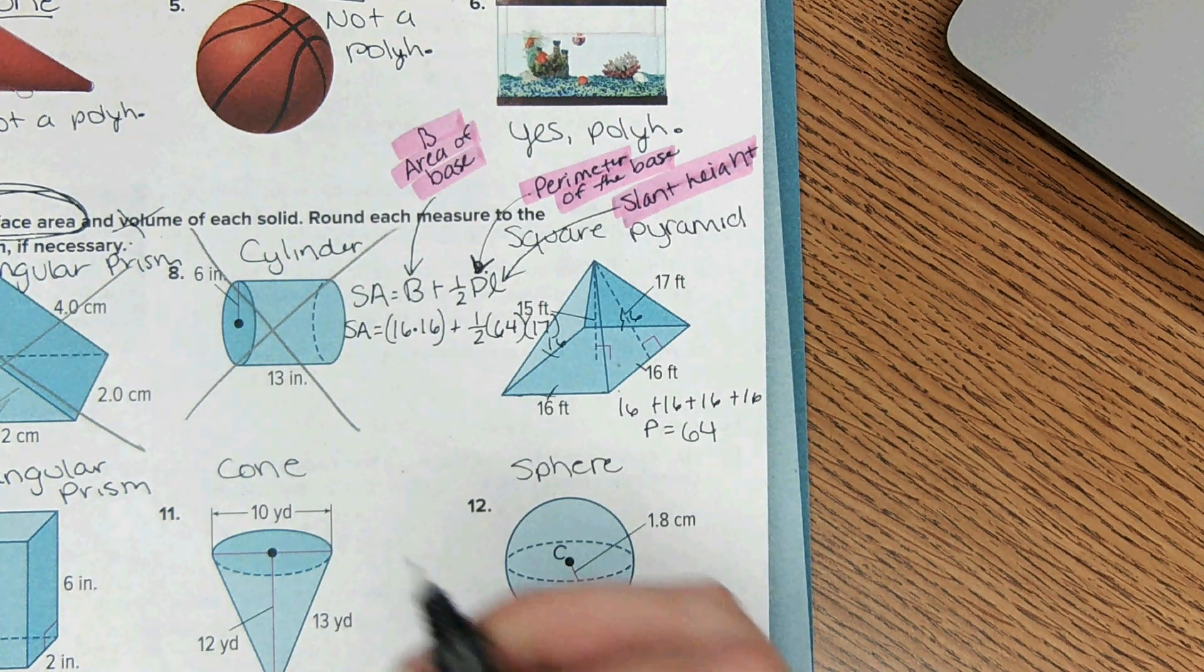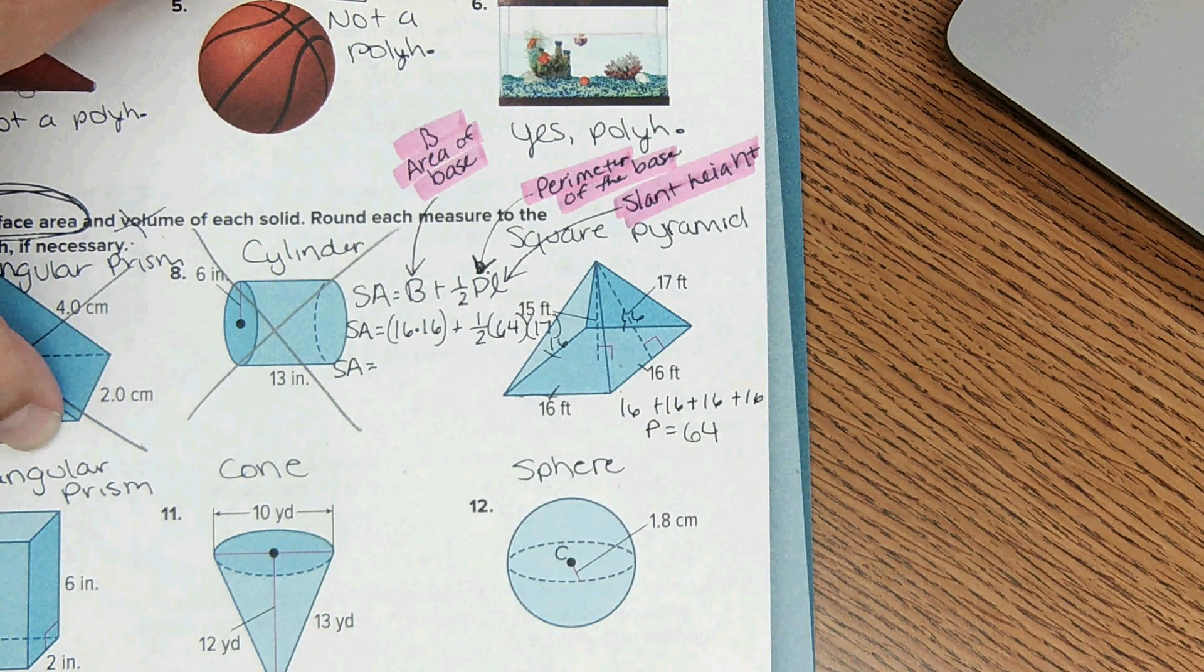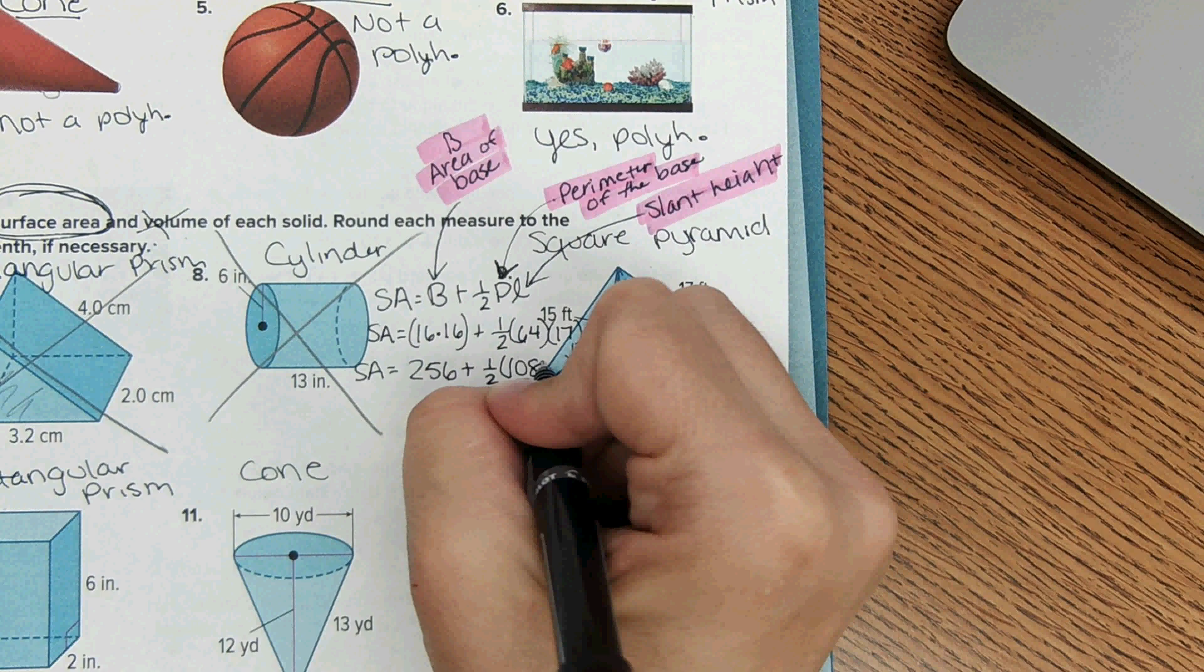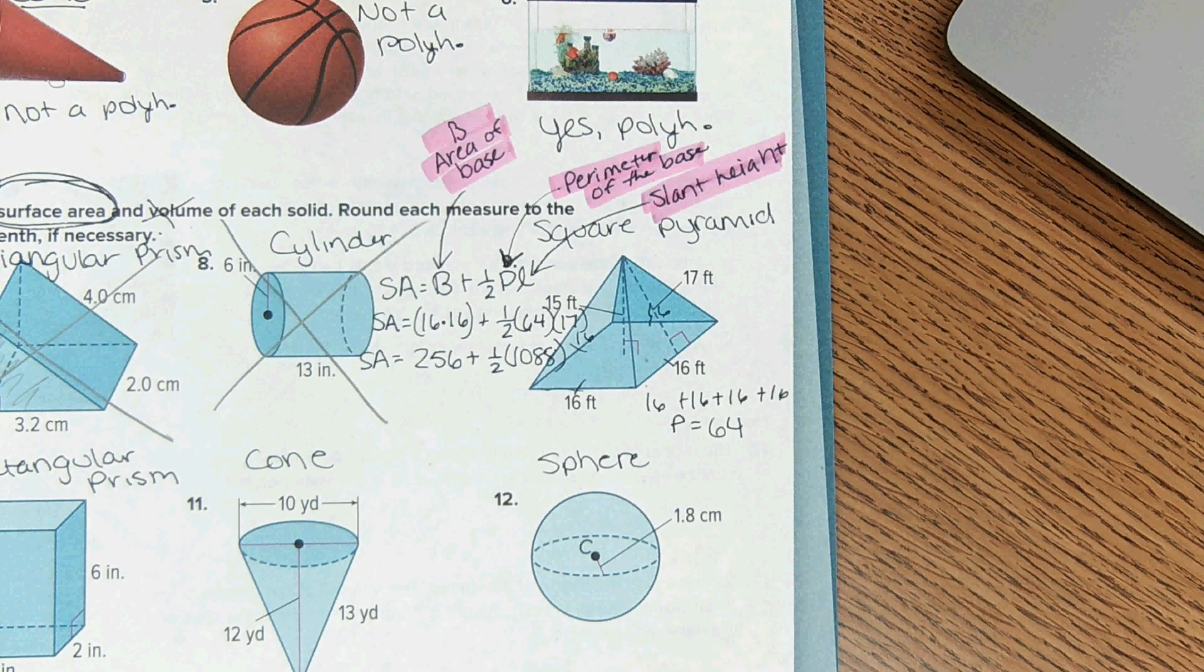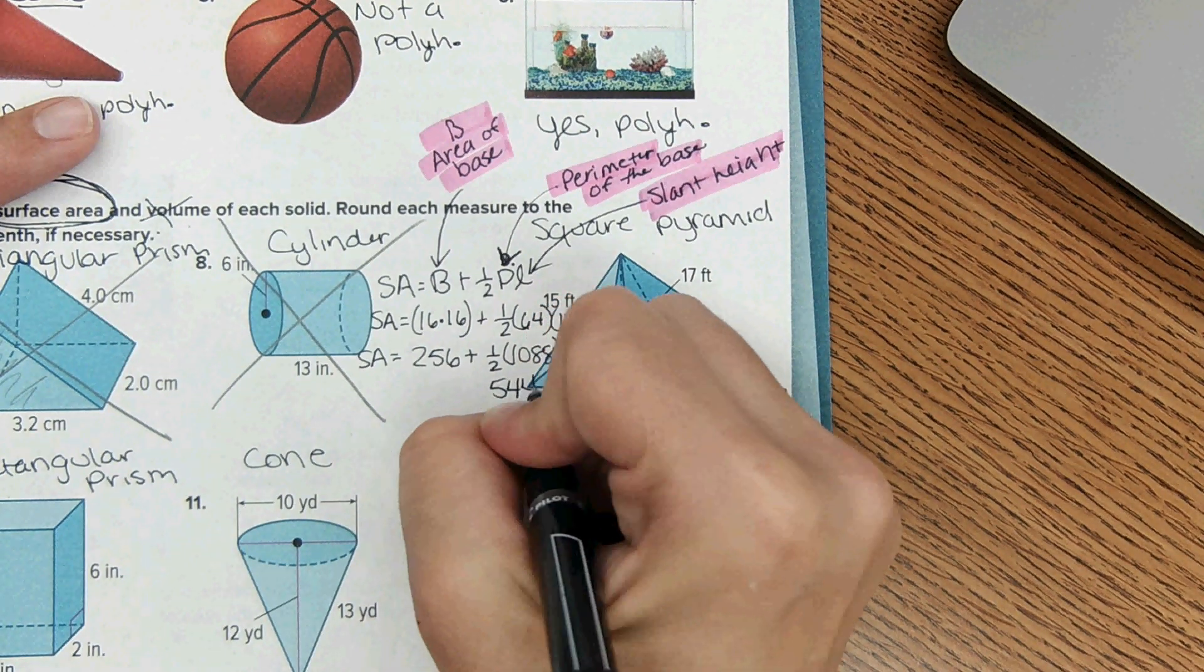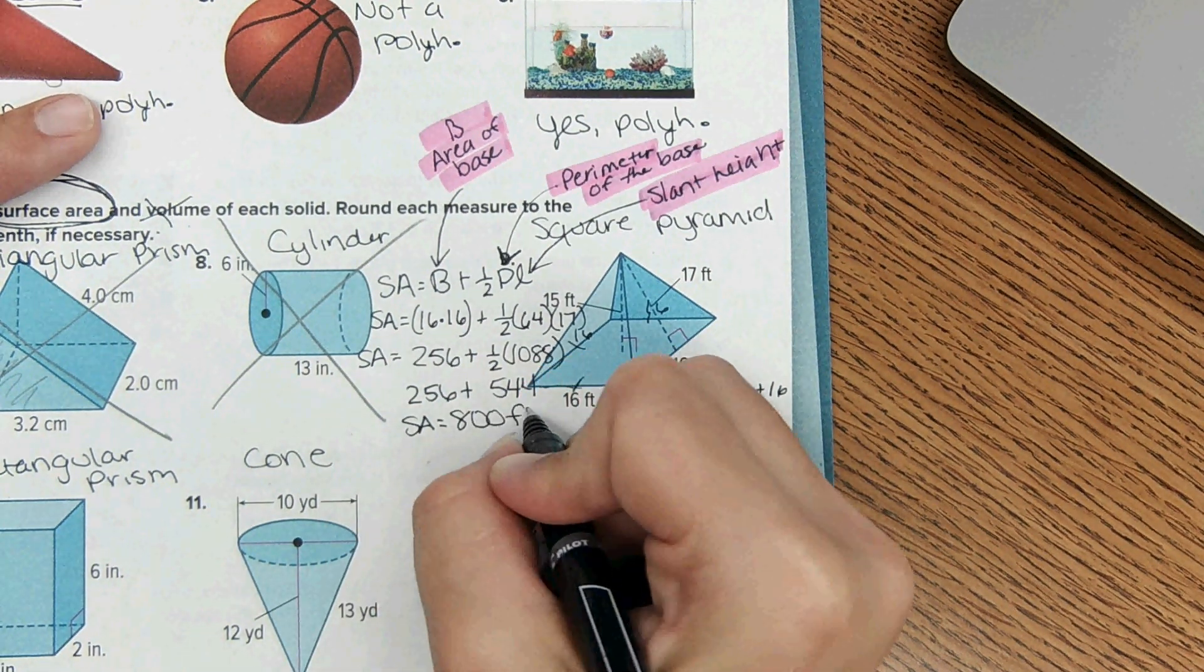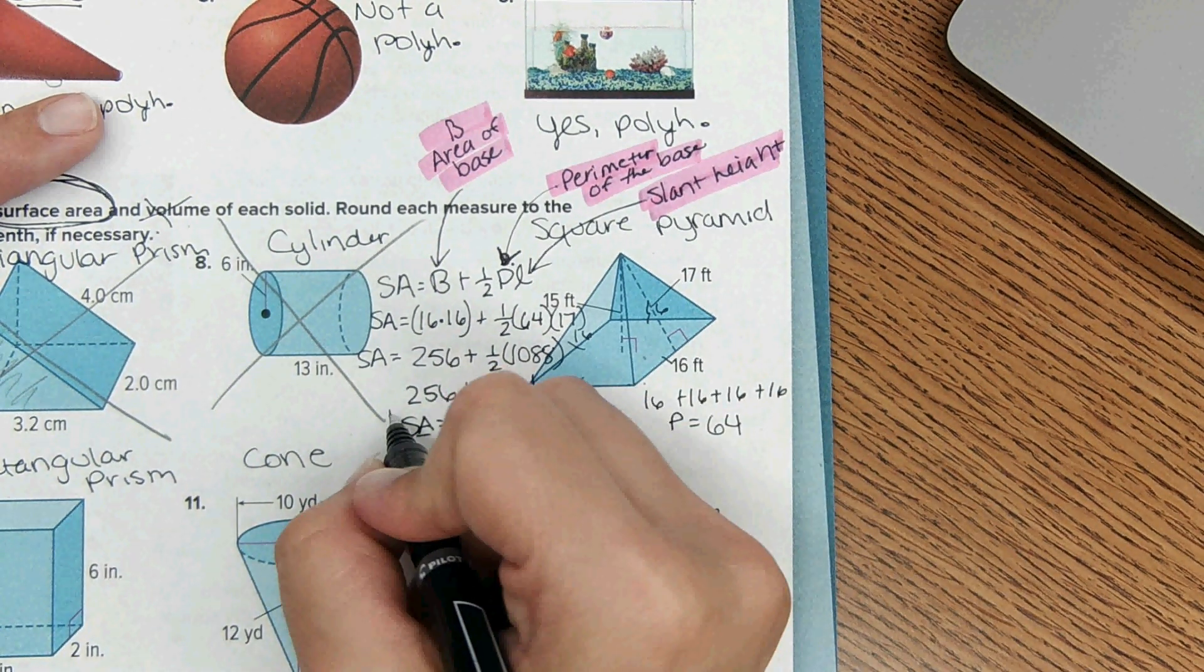Okay, now that we have all the numbers plugged in we just solve. Make sure to use order of operations - solve what's in the parentheses first. 16 times 16 comes out to 256 plus one half. Then half of 1088 would be 544 plus 256 equals 800, and it's feet squared because it is the area of all the surfaces. It's feet squared.